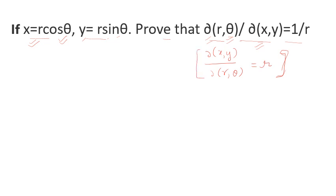Whenever this sort of question is asked, take x as your first variable. This can be expanded by Jacobian's theorem in the form of a determinant. The determinant contains: partial differentiation of the first variable with respect to r, then with respect to theta — and then partial differentiation of the second variable with respect to r and theta again.